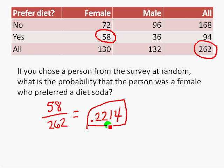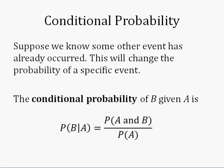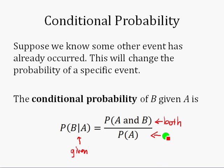That leads us to another concept called conditional probability — you'll do more with this in your probability and statistics class. Conditional probability works like this: suppose we know some other event has already occurred; this changes the probability of a specific event. The conditional probability of B given A uses this formula — the little bar means 'given.' The probability of one event given another occurred is the probability of both happening together, divided by the probability of the given condition.